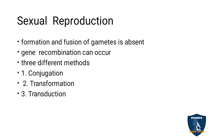So gene recombination can occur. Gene recombination only is going to take place, and based on that, it is classified into three types: conjugation, transformation, and transduction.